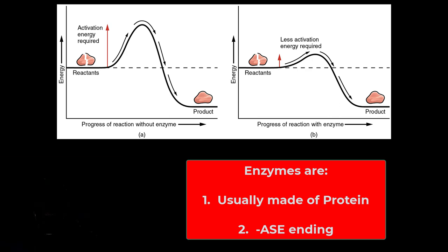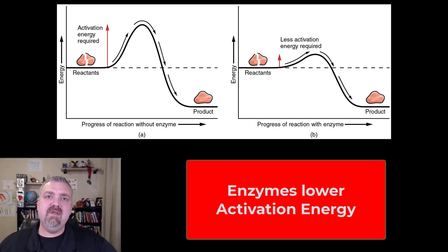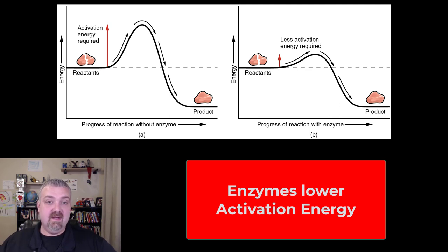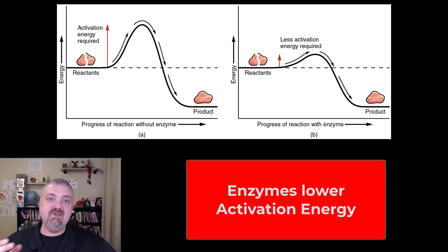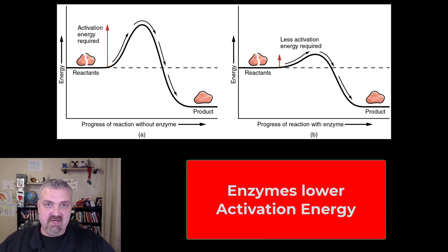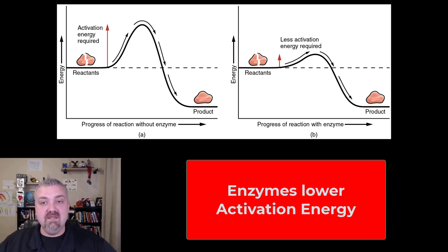But how do they work? Enzymes work by lowering activation energy. As you can see here on the left and right-hand sides, both images show different amounts of energy needed to turn reactants into products. Without an enzyme, you have a high activation energy and it would take too much energy in most situations. With an enzyme, you get a lower activation energy.